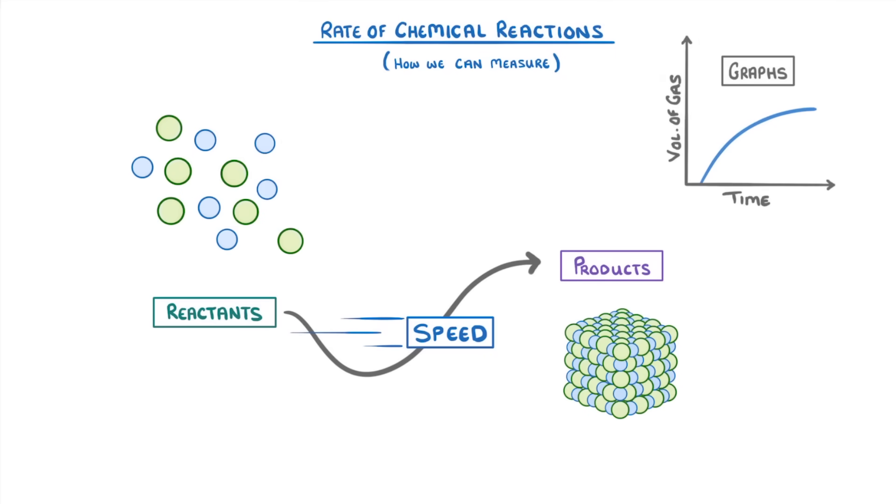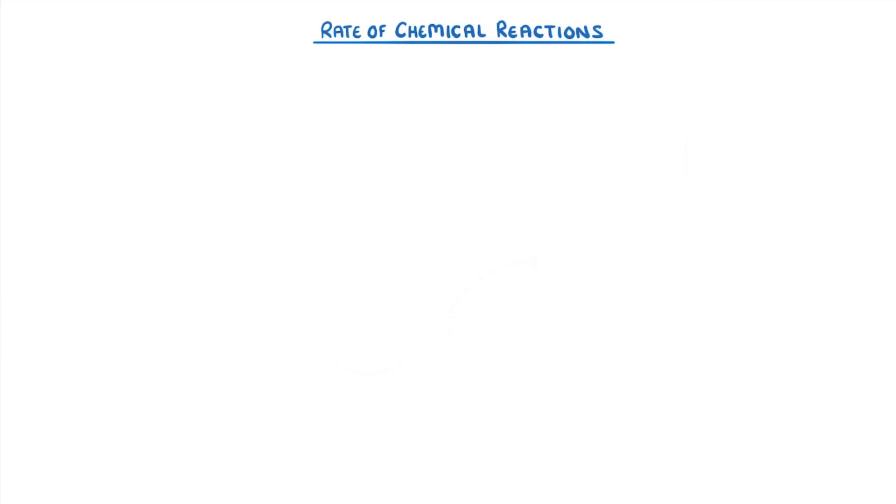First, though, it's worth understanding just how much the rate of reaction can vary. For a slow reaction, think of the rusting of iron, which can take years or decades.